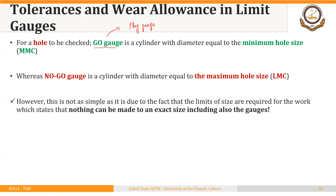There is a challenge: this is not as simple as it looks, because limits of size apply to everything including gauges — nothing can be made to an exact size. So we have to apply limits to the gauges as well. There are two questions: what should be the size of those limits, and in which direction should those limits be applied — should the tolerance be unilateral or bilateral?